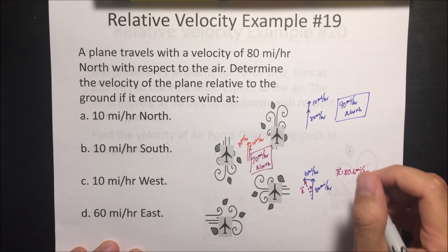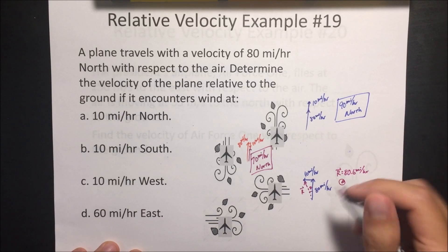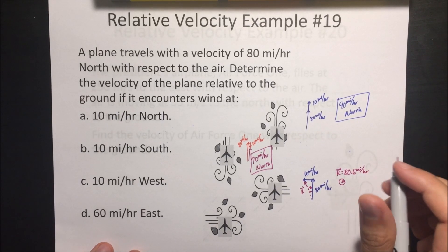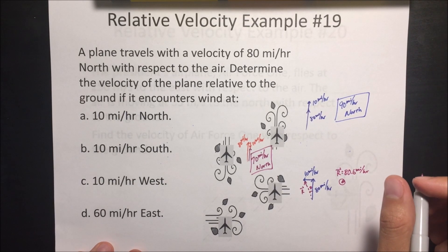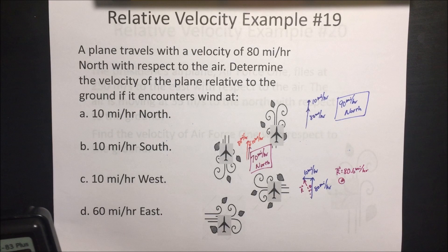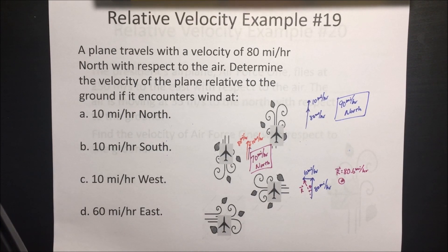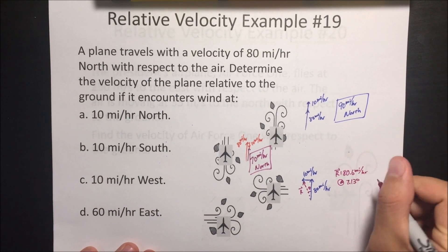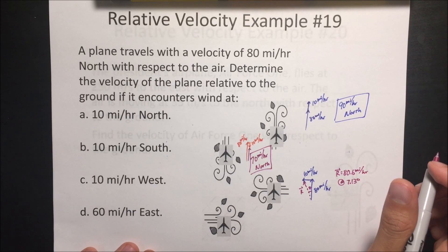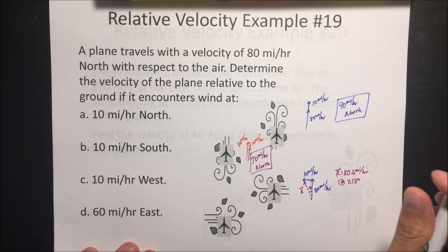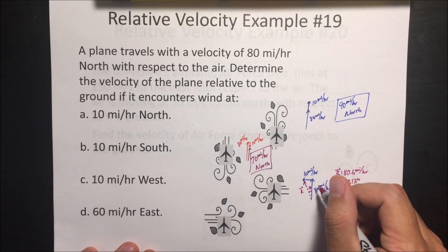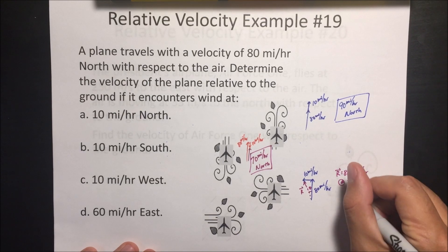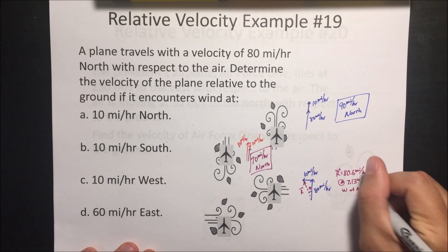The wind makes it go a little bit faster — the resultant is 80.6 miles an hour. Then we do the inverse tangent of 10 divided by 80, which gives us an angle of 7.13 degrees. So we can say this is 7.13 degrees west of north.